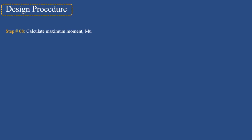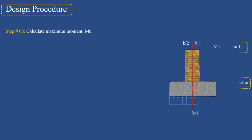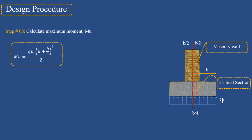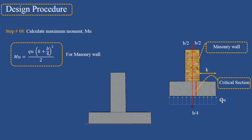Step 8: Calculate the maximum moment. The maximum factored moment is calculated at the critical section. For a footing supporting a masonry wall, the critical section is located between the edge and the middle of the wall. For a masonry wall, the maximum moment equals the corresponding equation; for a concrete wall, the maximum moment equals its corresponding equation.